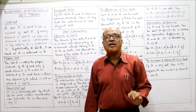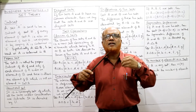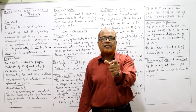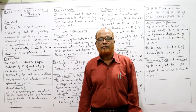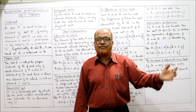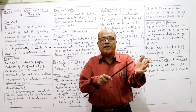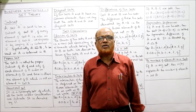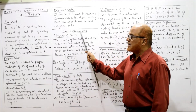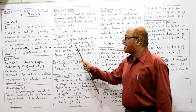Disjoint sets: two sets are said to be disjoint if no element is common in both sets — that is, the elements of both sets are entirely different. For example, if set A = {A, B, C} and set B = {D, E, F}, there are no common elements at all, so both sets are called disjoint sets.